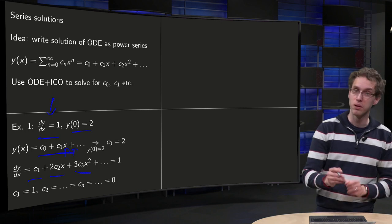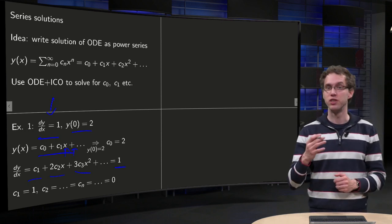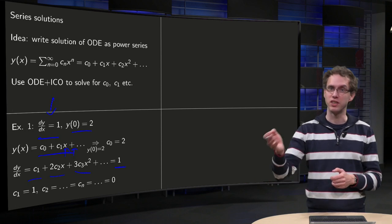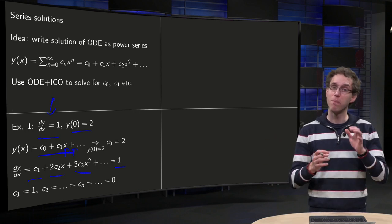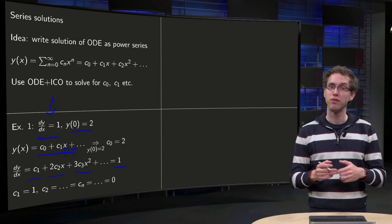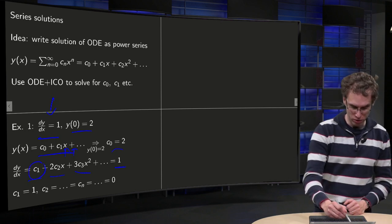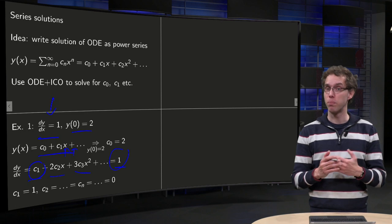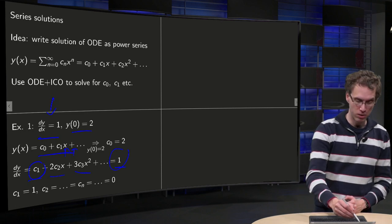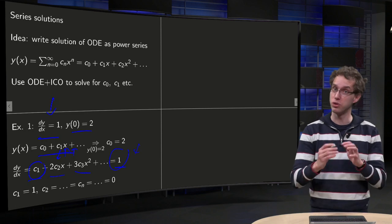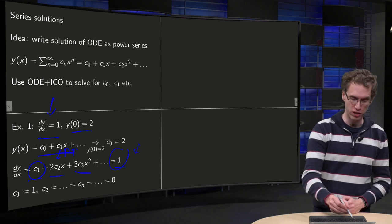So this power series has to be equal to 1 plus 0 times x plus 0 times x squared, etc. So if we compare left and right hand sides, we first compare all constants, so we observe c1 has to be equal to 1. Then we compare all terms with x's, so 2c2 times x, there are no x's here, so 2c2 equals 0. Then the terms with x squared, c3 times x squared,